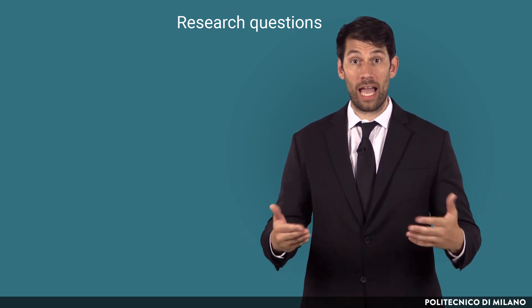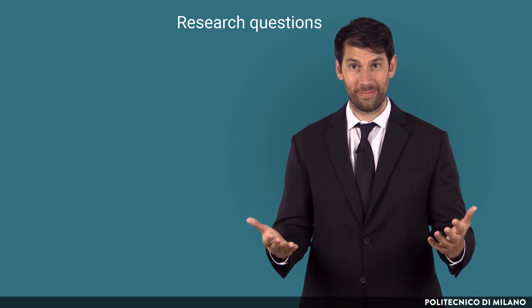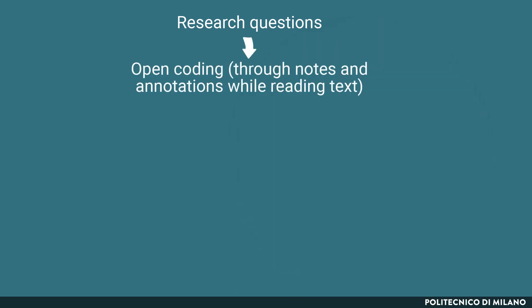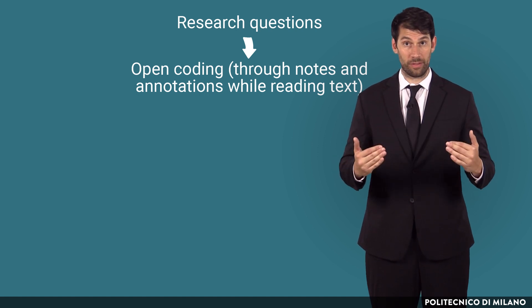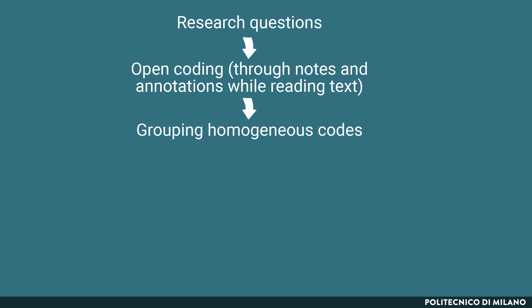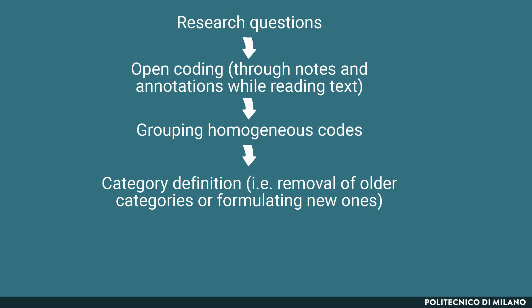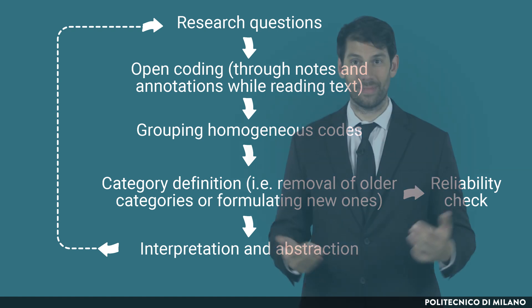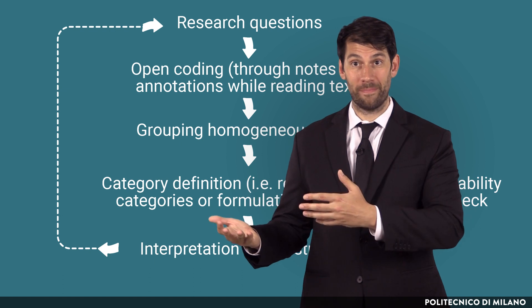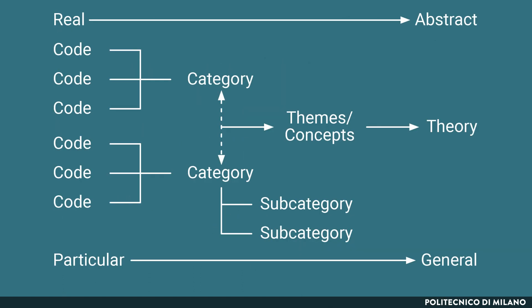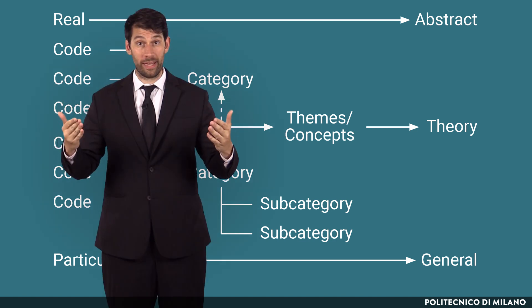Inductive coding, on the contrary, still starts from a broadly defined research question, as it happens in exploratory cases, but is more open about how the empirical data and information collected can shape the theoretical implications. This is why such approach is also called open coding. Here, the researcher starts from the text, and labels are not predetermined from theory, but stem from text analysis. Homogeneous codes are hence grouped so as to define growingly abstract categories, which in turn will be interpreted in the light of existing theories. These theories may be similar to the ones that drove the definition of the original research questions, but may even depart from them. The resulting inductive coding tree shows how we move from a particular and real-world code to general and abstract theories, thus making for theory building.